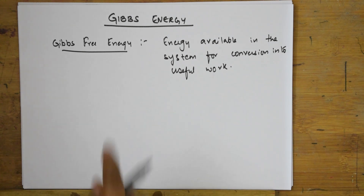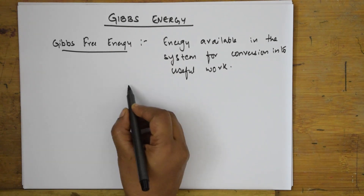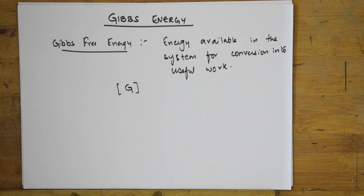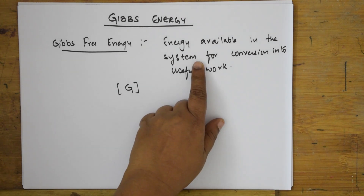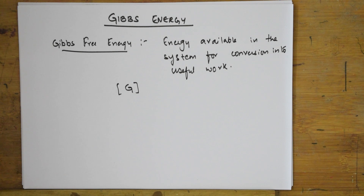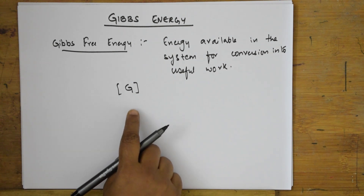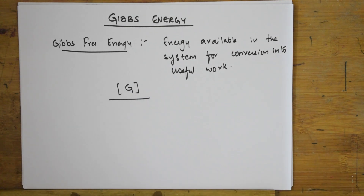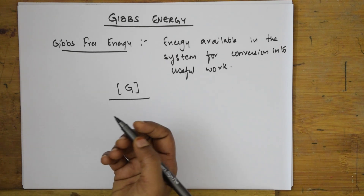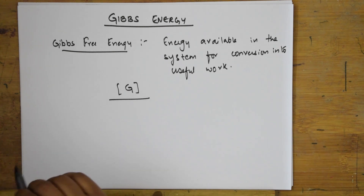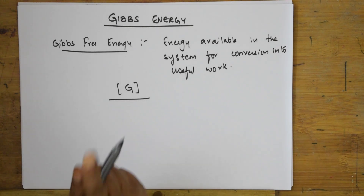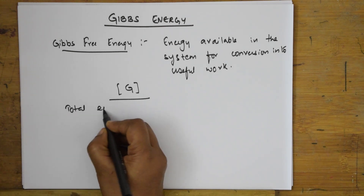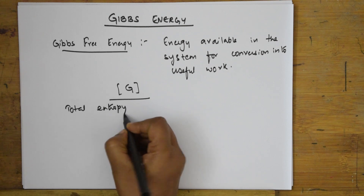Gibbs free energy is denoted by capital G. Now, whenever you learn the Gibbs energy concept, we will start from entropy — that is why I covered the entropy concept earlier. The change in entropy is denoted by ΔS. When I start with Gibbs energy, the first important concept is the total entropy change.